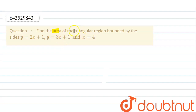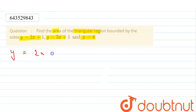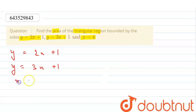The question says: find the area of the triangular region bounded by the sides y = 2x + 1, y = 3x + 1, and x = 4. So we have been given the equations of three sides — the first one is y = 2x + 1, the second is y = 3x + 1, and the third is x = 4.